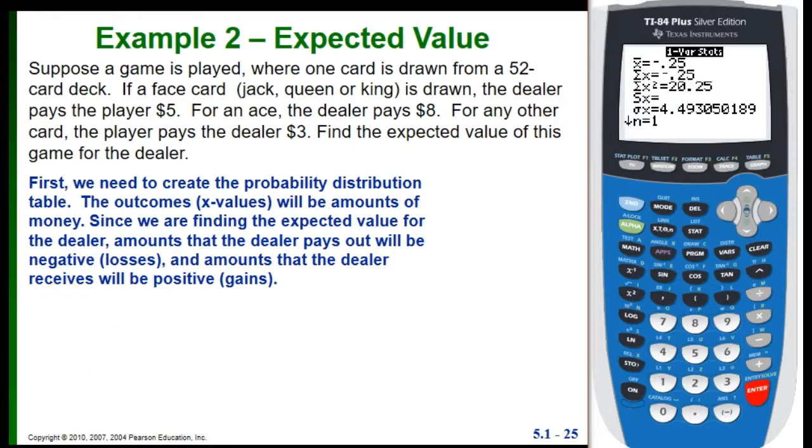For this one, we have another game where we're drawing one card. This time, if it's a face card, the player gets $5. If it's an ace, the player gets $8. And for any other card, the player has to pay the dealer $3. So we're going to find the expected value of this game for the dealer. So we need to think about our probability distribution in terms of what the dealer is getting out of it instead of the player.